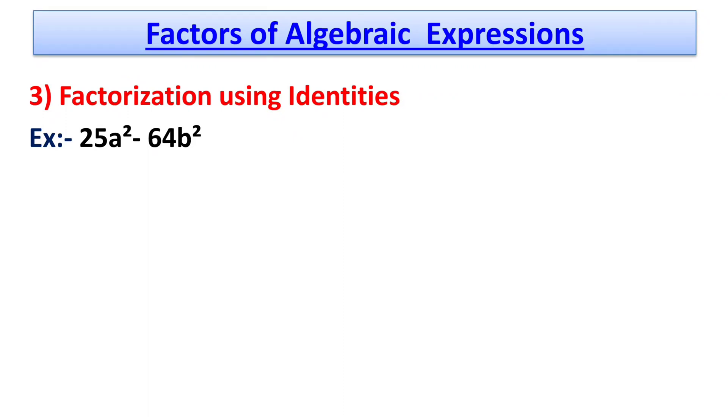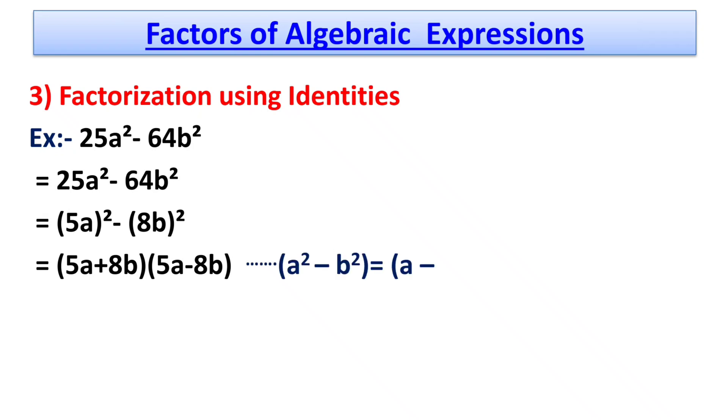As we know, 25 is the square of 5 and 64 is the square of 8. So we can write it as (5a)² - (8b)² = (5a + 8b)(5a - 8b).